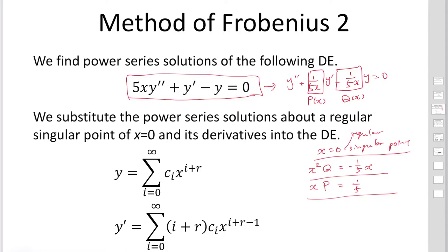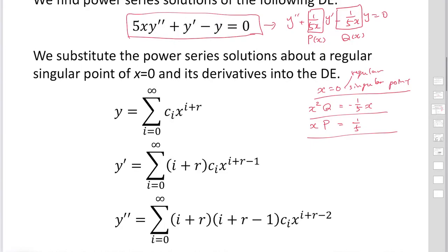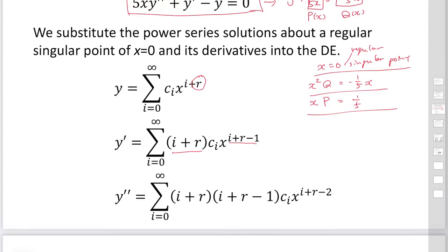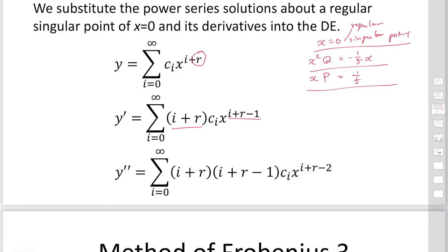We substitute the power series solution about the regular singular point at x = 0. The Frobenius method gives the series y = Σ cᵢ·x^(i+r). Taking the first derivative gives the factor (i + r), and the power index is decreased by 1. The second derivative introduces the factor (i + r)(i + r − 1), with the power index decreased by 2.